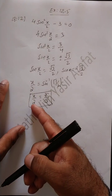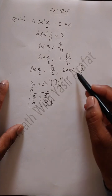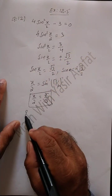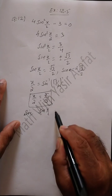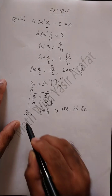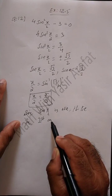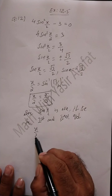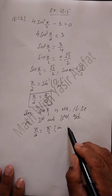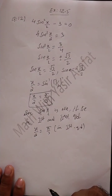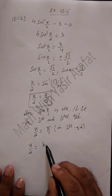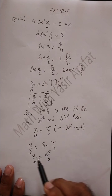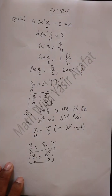We will adjust the 2 when we add the period. Since sin(x/2) is positive, it lies in the first and second quadrant. In the first quadrant: x/2 = pi/3, no change. In the second quadrant: x/2 = pi minus pi/3 = 2pi/3. So for the positive case we have x/2 = pi/3 and x/2 = 2pi/3.